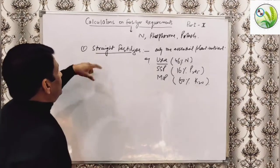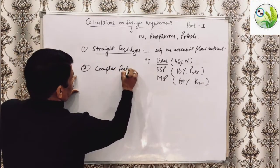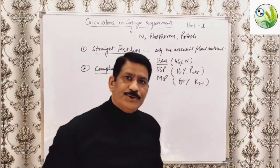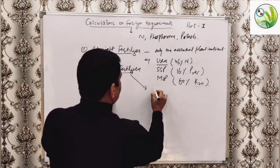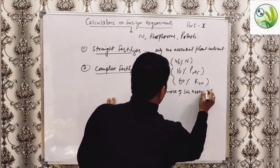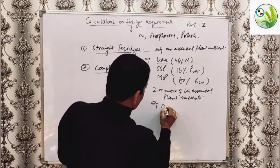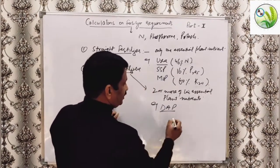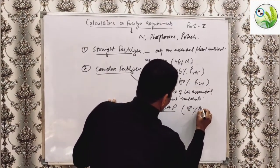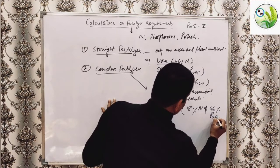The next one is complex fertilizers. These are basically those fertilizers which supply two or more of the essential plant nutrients. For example, DAP, that is di-ammonium phosphate, which supplies 18% nitrogen and 46% phosphorus in the form of P₂O₅.